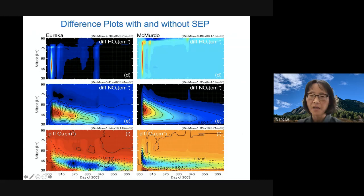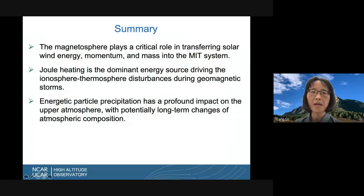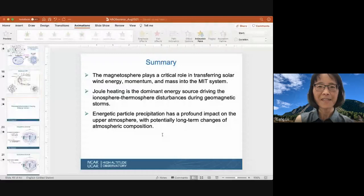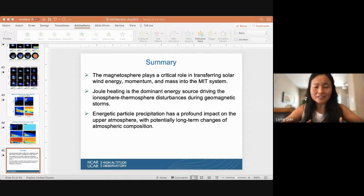To wrap up: I hope I've conveyed the message that the magnetosphere is a very important conduit for transferring solar wind energy and momentum into the IT system. Joule heating is a very important — perhaps dominant — energy source for driving thermosphere-ionosphere disturbances during geomagnetic activity. Energetic particles also have important effects on the atmosphere. I'm happy to answer any questions. Thank you.